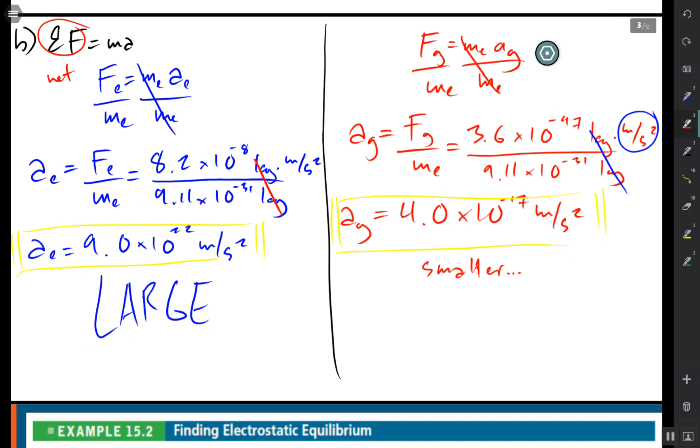So electric forces or columbic forces are generally way way greater than gravitational force. I had one story of how a student was convinced that the planets were held together by electromagnets but that will save for another day. And we will stop right here.